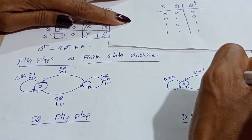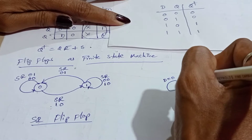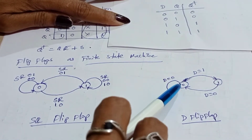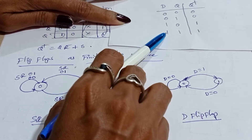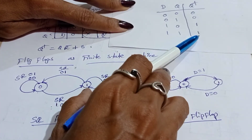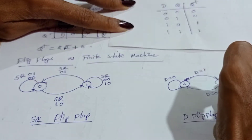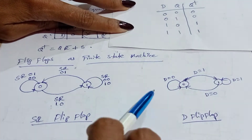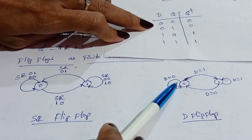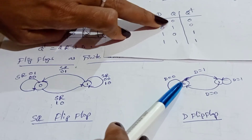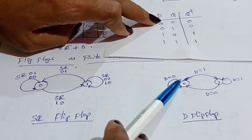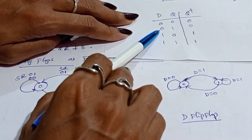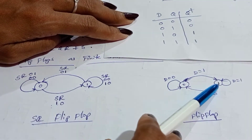This side arrow mark — it is changing from 0 to 1. When D is 1, it is in the same state. When D is 0, it is in the same state. Again, when D is 0, it is changing from state 1 to state 0.